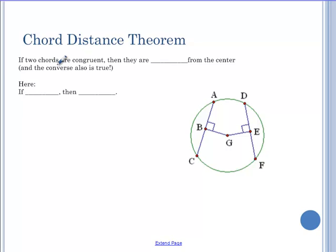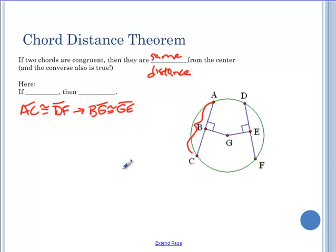Chord-distance theorem says if two chords are congruent, then they are always the same distance from the center. I didn't leave myself enough room for this. Same distance from the center. So here, if AC is congruent to chord DF, then BG is congruent to GE. So if this chord here is the same congruency as this chord, then I know that BG is congruent to GE.